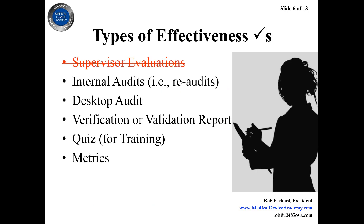One method some people suggest is a supervisor evaluation — I cross that off and do not recommend it either. Supervisor evaluations are not systematic audits; they're not objective, they're very subjective. And if the supervisor really knew how to prevent the problem in the first place, they wouldn't have had to write a CAPA. If the issue is limited to one employee, it probably didn't deserve a CAPA — it probably needed a correction. So if it's worthy of a CAPA, a supervisor evaluation is probably not good enough.